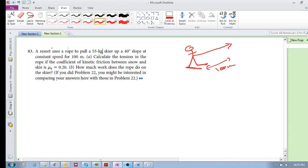It says calculate the tension in the rope if the coefficient of kinetic friction. Let's try and draw this properly. They're on this incline with these skis, and they've got this cable that's pulling them up by a motor or something uphill. Calculate the tension in the rope if the coefficient of kinetic friction between the snow and skis is 0.2.